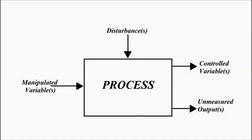The various variables involved in a process are the input variables, which are divided into two categories: manipulated variable and disturbance. The manipulated variable directly controls the output — which is the controlled variable. Disturbances are unwanted, unnecessary inputs which can cause fluctuation or deviation in the output. In the output, we have the controlled variable, which we want to keep in a certain range, and the unmeasured output, which can be seen as a byproduct of the process.